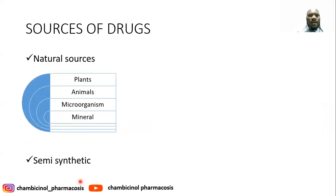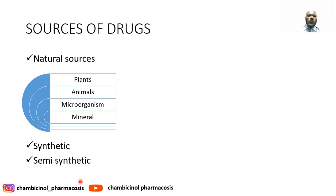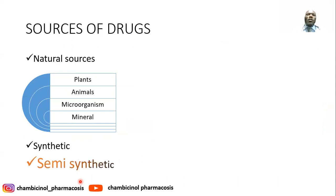Another aspect we are going to discuss is the source of drugs. We have different sources: natural sources, synthetic, and semisynthetics. Natural sources include plants, animals, microorganisms, and minerals. Starting with the natural source from plants — this is the oldest system involving the empirical use of drugs.